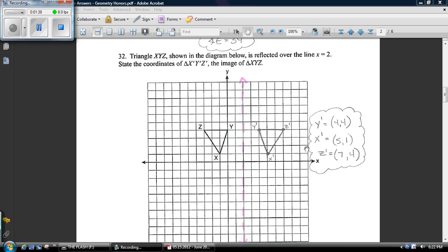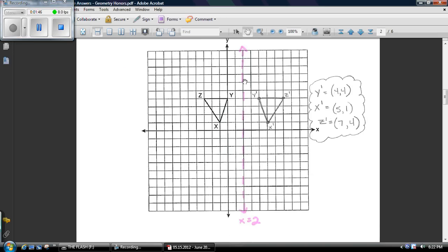All right, 32. Here we go. The trick for this one is the fact that it tells you that they want you to reflect this triangle over the line X equals 2. Now, remember X equals are lines that go up and down. Also, look at where this thing is. It's touching the Y axis.